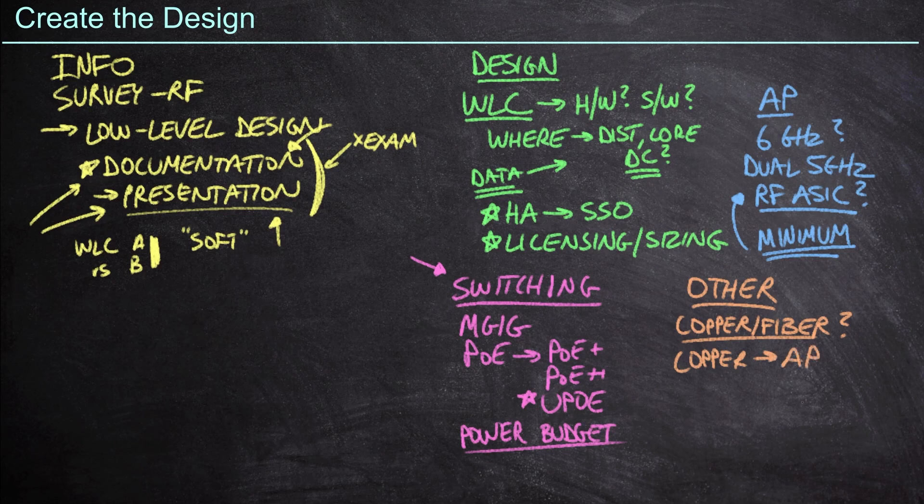Furthermore, do we need copper connectivity to the access points? A lot of times when we're installing the access points in the ceiling, the copper run is going to be terminated into a female connector. And so we'll need a patch cord to connect our access point in. And by the way, is that cat 6a? Is it some other type of connector? So let's make sure that we've got the right cables there.